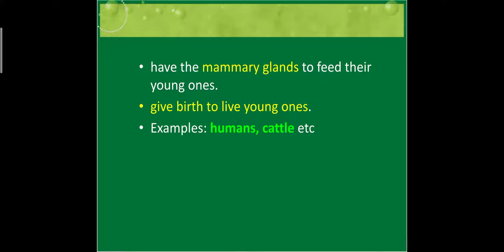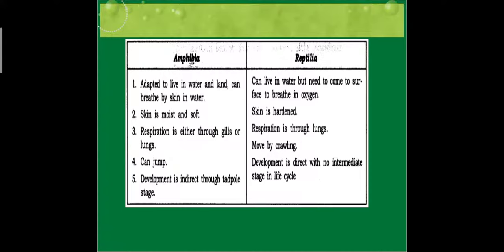Before we go to the next topic, let me explain the difference between a few classes. Difference between Amphibia and Reptilia: Amphibians have adapted to live in water and land and can breathe through their skin in water. Reptilia can live in water but need to come to the surface for breathing. Skin of Amphibia is moist and soft while Reptilia's skin is hardened. Respiration in Amphibia occurs through gills or lungs; in Reptilia, only through lungs. Amphibia can jump while Reptilia move by crawling. Amphibia develop indirectly through a tadpole stage while reptiles develop directly with no intermediate stage.